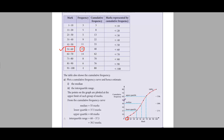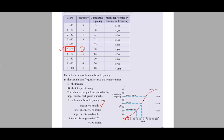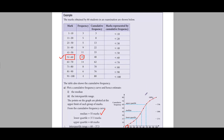Using the cumulative frequency curve, we can tell exactly what one number is the median. Here the median is exactly 55. This is the advantage of drawing cumulative frequency curves — it gives us exactly one number for the median, one upper quartile, and one lower quartile.